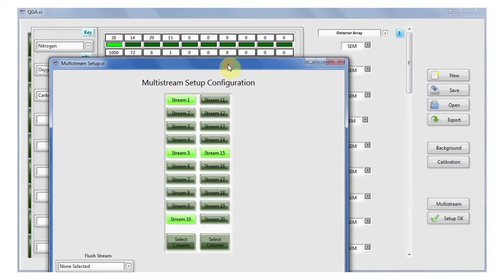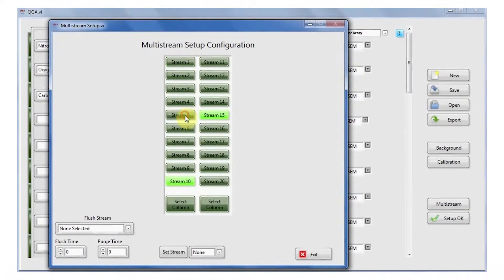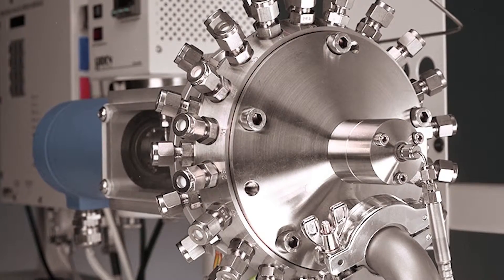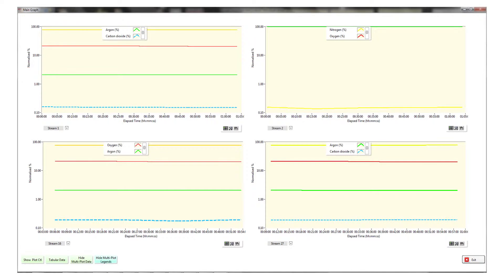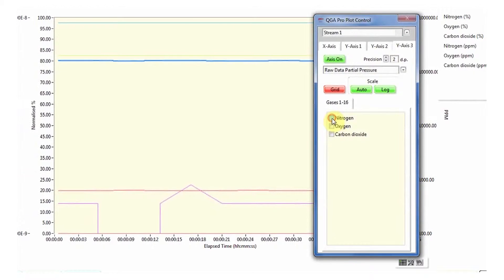The QGA is available with a range of gas analysis inlet modules, including multi-stream inlets for analyzing 4, 8, 20, 40, or even up to 80 gas streams. The software allows you to look at up to 4 streams at a time and select each stream for viewing in graphical and tabular mode.